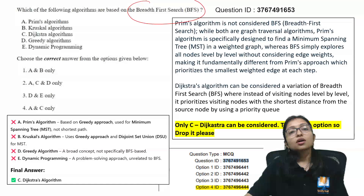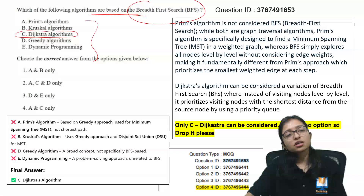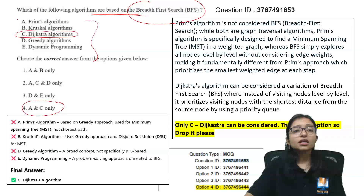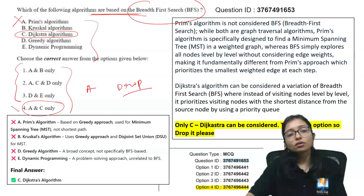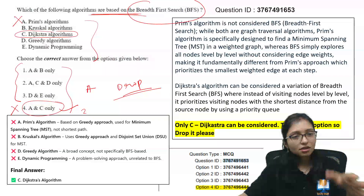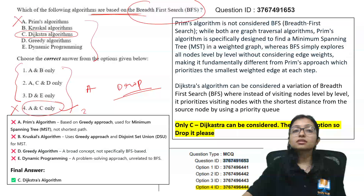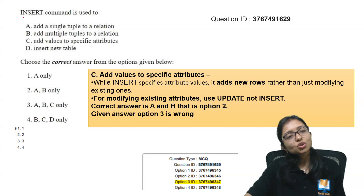They asked which algorithms are based on breadth-first search. Out of all options, we can say only Dijkstra is a little bit based on BFS. They gave the answer as options A and C, but Prim's is not based on BFS at all — not at all — so that's wrong. There is no option for 'only A,' so this question can also be dropped. Those who marked anything other than the given answer can challenge, and those who already marked it have already gotten 2 marks. Everyone will get marks when it's dropped.